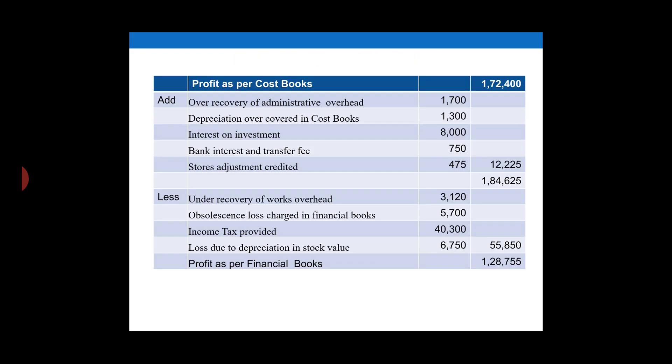Profit as per cost book: 1,72,400. Add: depreciation over-recovered in cost book, interest on investment, buying interest and transfer fee, stores adjustment credit. Less: under-recovery of works overhead, obsolescence loss charged in financial books, tax provided, and loss due to depreciation in stock value. This gives the profit as per financial books.